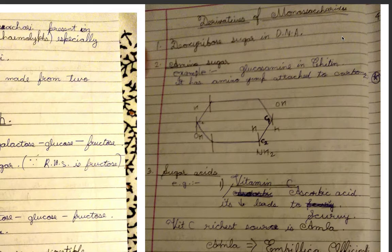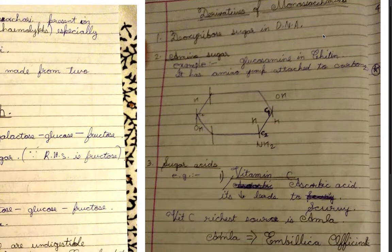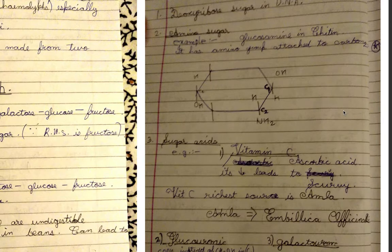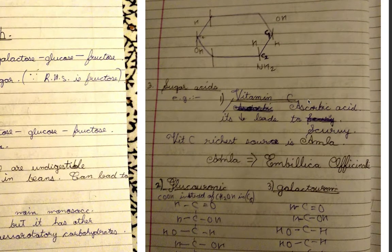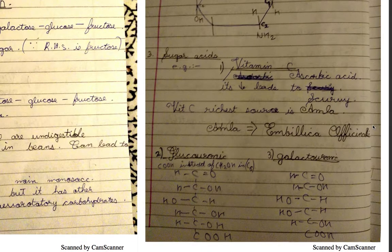Derivatives of monosaccharides: monosaccharides can be further derivatized into other well-known saccharides. There are four to remember: first, deoxyribose sugar found in DNA; second, amino sugars such as glucosamine and chitin, which have an amino group attached to carbon 2; third, sugar acids like vitamin C, also known as ascorbic acid, whose deficiency leads to scurvy — the richest source is amla, also known as Emblica officinalis.